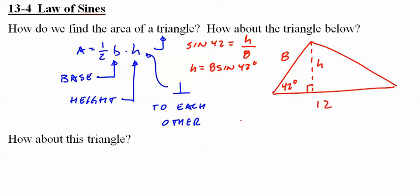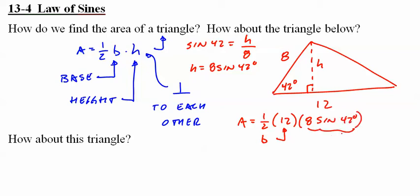Now if we want to find the area, we take one-half base times height: 12 times 8·sin(42°). Blast it out on the calculator and we get 32.1 units squared.